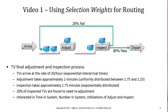Following adjustment, the TVs go through inspection, which requires approximately 1.75 minutes. 20% of the inspected TVs are found to need readjustment and so they return from inspection back to adjustment. For our system, TVs that fail inspection will be treated just like new TVs. For this system we're interested in typical queuing metrics: time in system, number of TVs in the system, and utilizations of the adjustment and inspection stations.